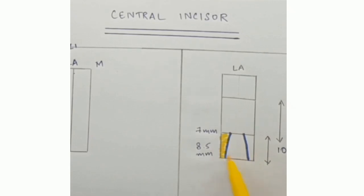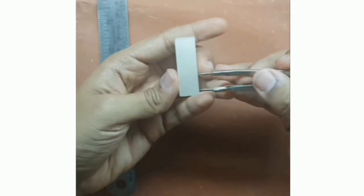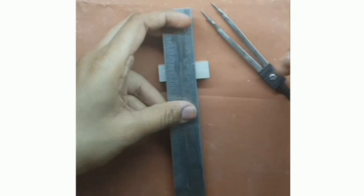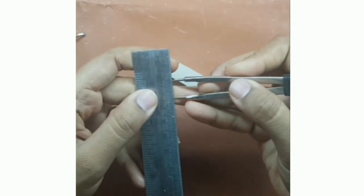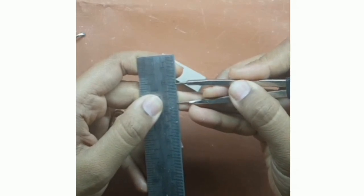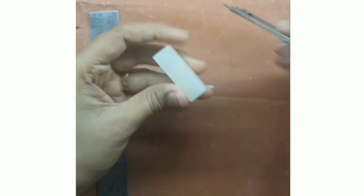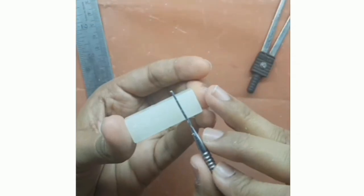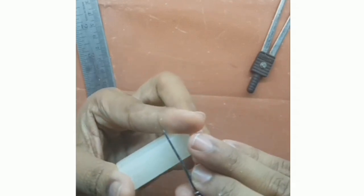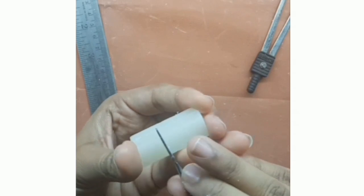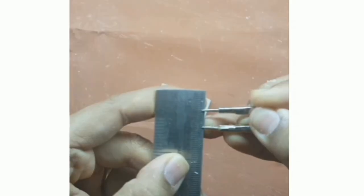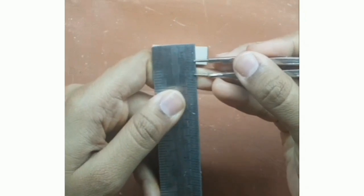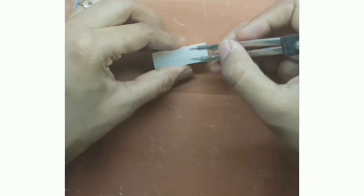Now remove the excess wax from both the sides. With the help of a divider, measure 10.5 mm — that is the crown length — and mark it on the labial aspect. Now measure 13 mm — that is the root length — and mark it on the labial aspect. Now extend the crown and the root length on all the four aspects. Measure 8.5 mm and mark on the middle third of the crown, and measure 7 mm and mark at the cervix.